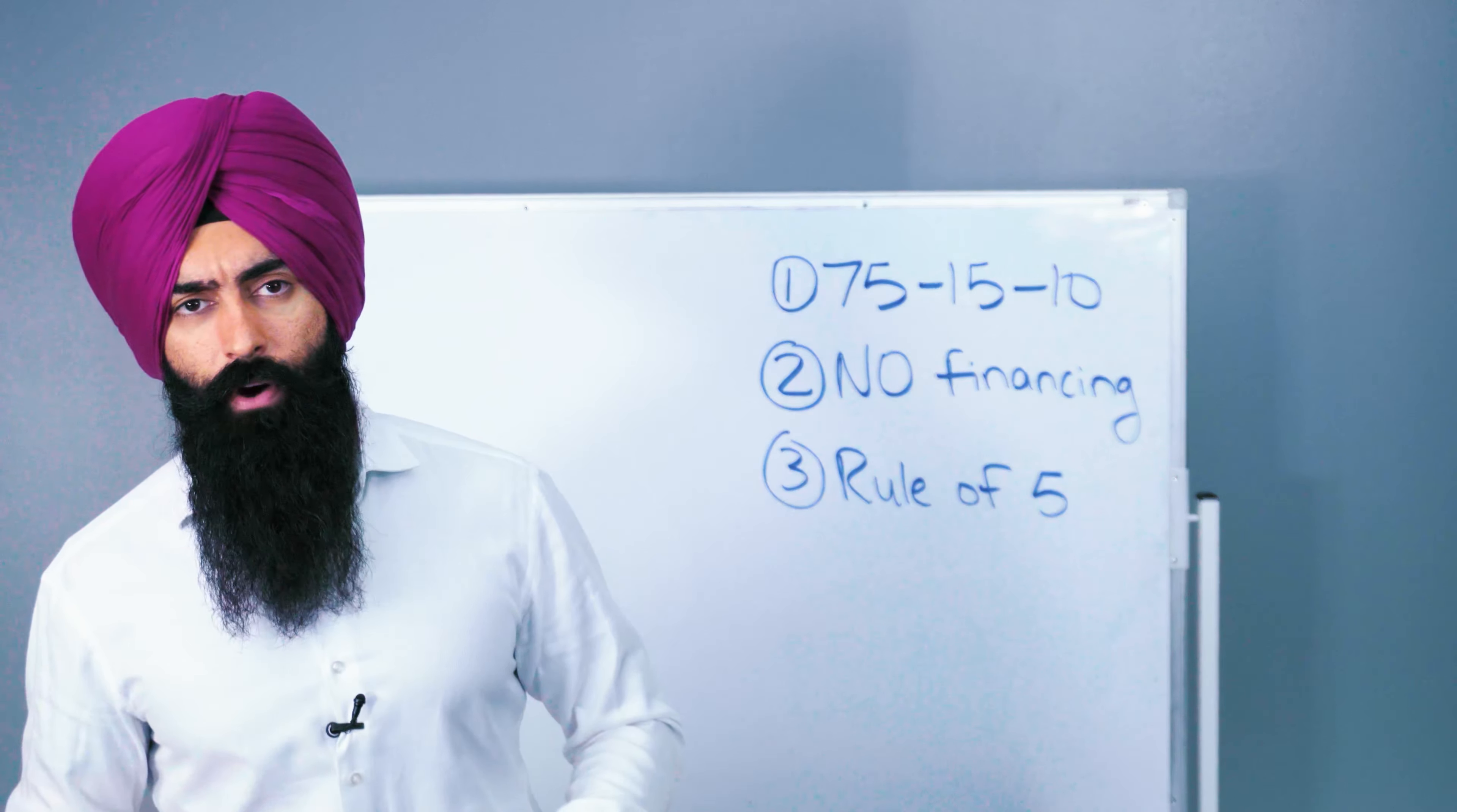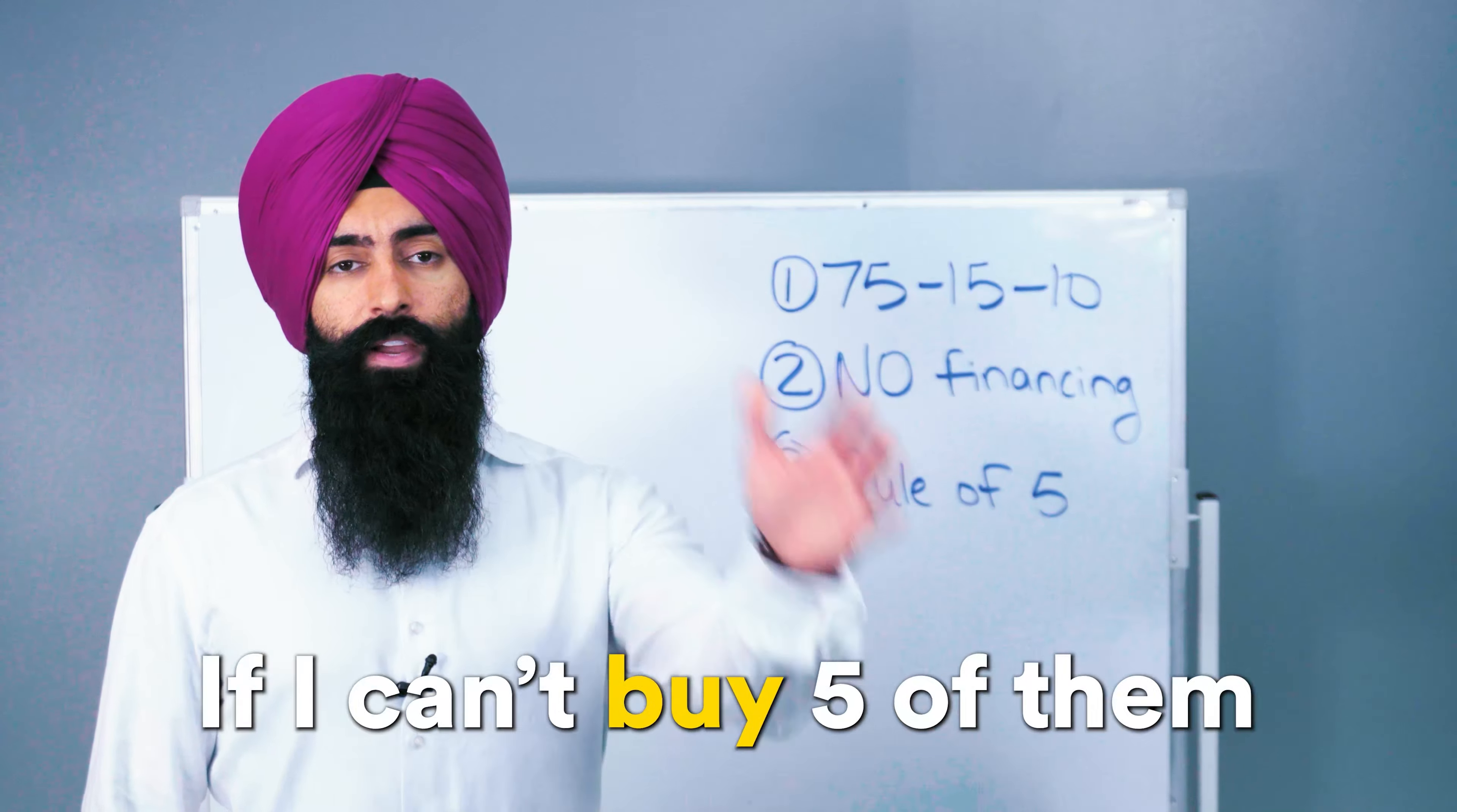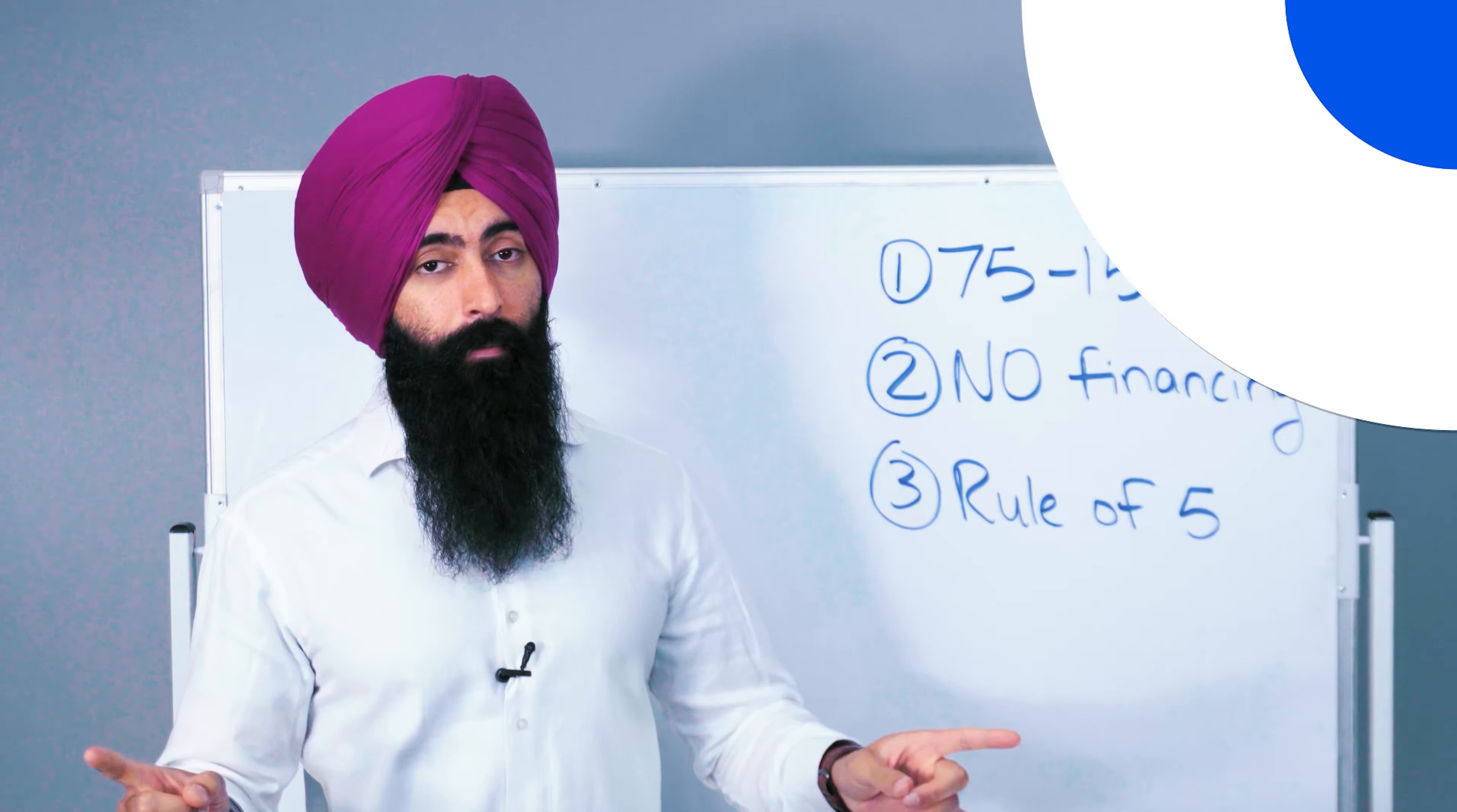And one of the rules that I like to follow for luxury things that don't put any money in my pocket is the rule of five, which says if I cannot buy five of them, I cannot afford one of them. This simple rule will allow me to be a little bit smarter with the way that I spend my money.